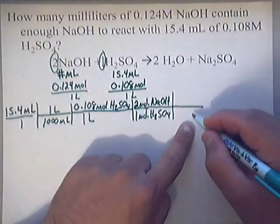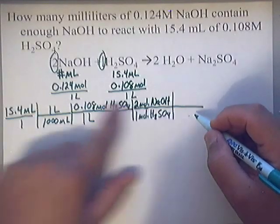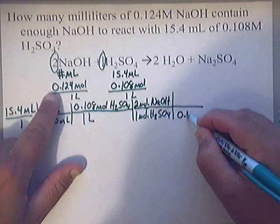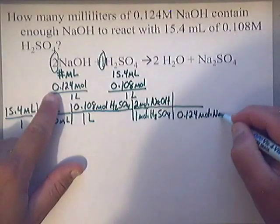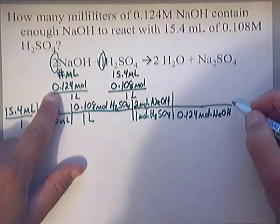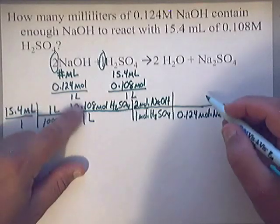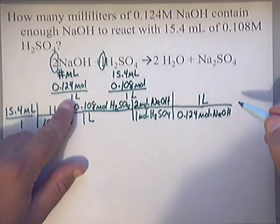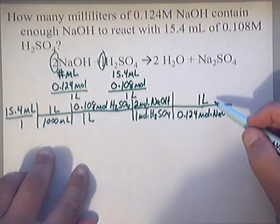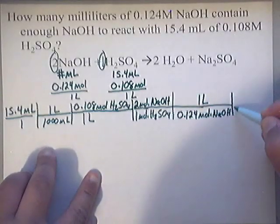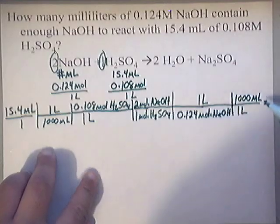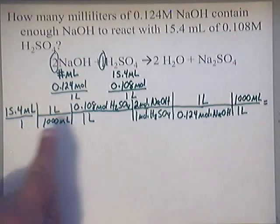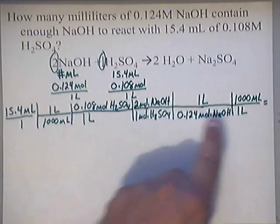Now you need moles of NaOH on the bottom — that comes from the NaOH concentration: 0.124 moles of NaOH per 1 liter. Put 1 liter on top. That gives you liters, but they want milliliters, so add one more step: 1 liter on the bottom and 1,000 milliliters on top. That's a total of 6 steps in the conversion chain.